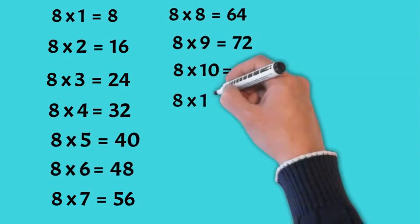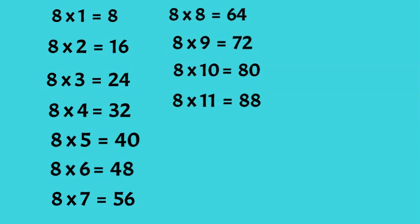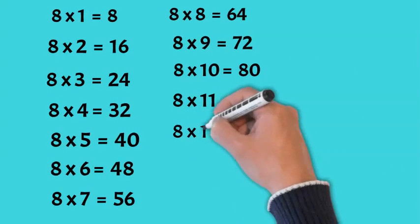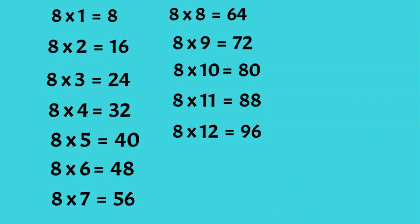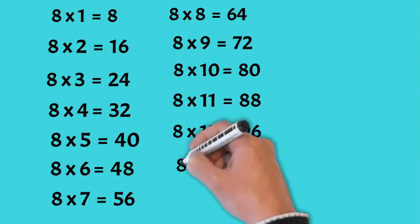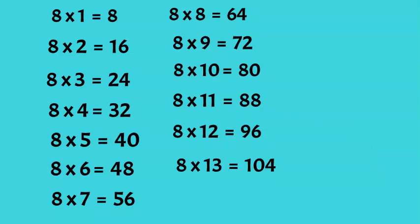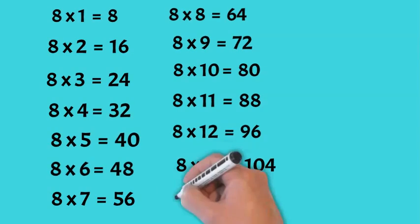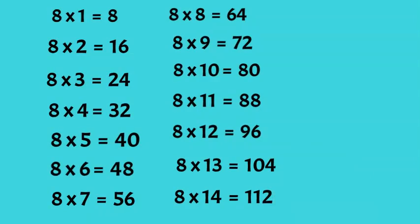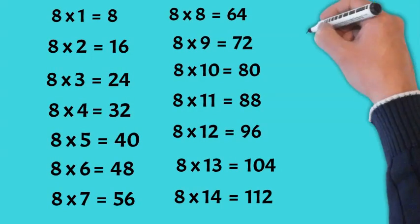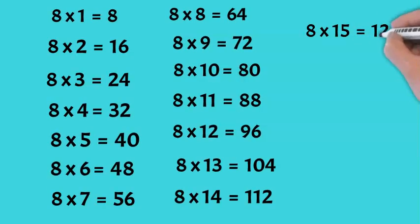Eight times eleven is 88. Eight times twelve is 96. Eight times thirteen is 104. Eight times fourteen is 112. Eight times fifteen is 120.